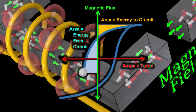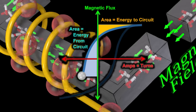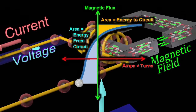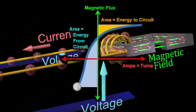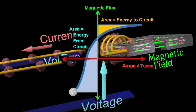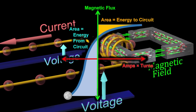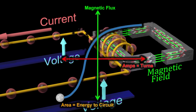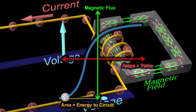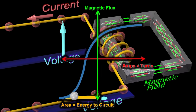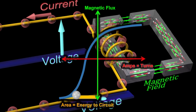Magnetic fields do not like to change, and they therefore try to prevent the current from changing. When we want to increase the current, the magnetic field fights against this increase, and we therefore need to supply energy from the circuit. When the current decreases, the magnetic field tries to keep the current going, and the energy is therefore returned from the magnetic field to the circuit.